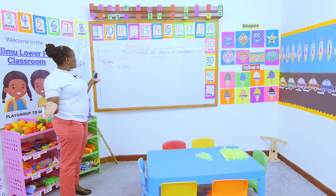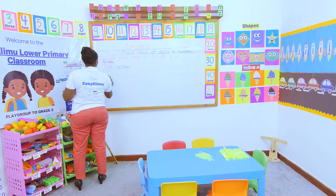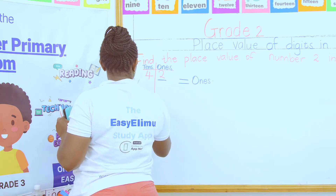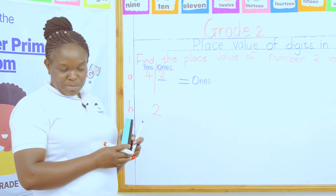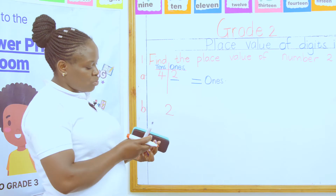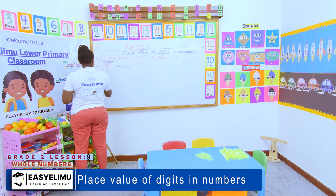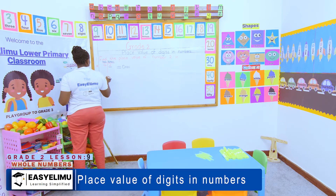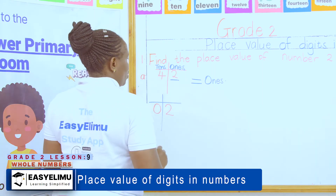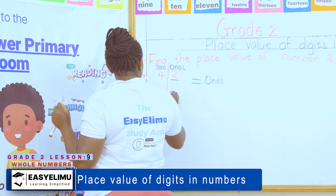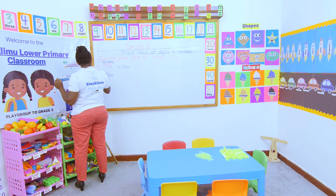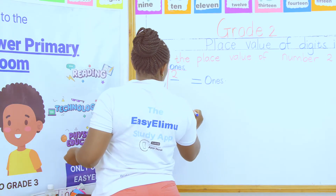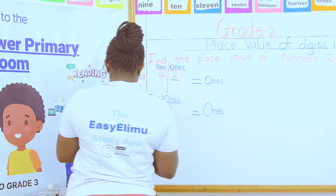The second question was: find the place value of number two in the number two. How is it possible to find the place value of number two in just the number two? When you have been given a single digit, what are you supposed to do? Put a zero before that number, then draw the place value chart. So what is the place value of number two? It's still ones.